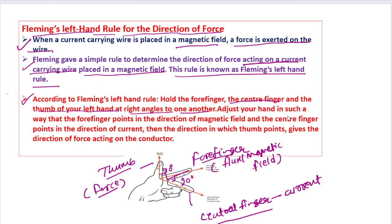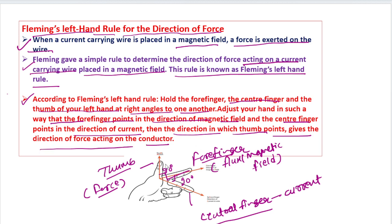Adjust your left hand such that the forefinger points in the direction of magnetic field and the center finger points in the direction of current. Then the direction in which the thumb points gives the direction of force acting on the conductor. This is the basic idea of Fleming's Left Hand Rule.